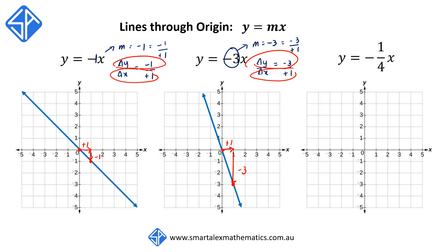Our last example is y is equal to negative one-quarter x. This time m is equal to negative one-quarter, or negative 1 over plus 4, so Δy over Δx equals negative 1 over plus 4. We again start at the origin.